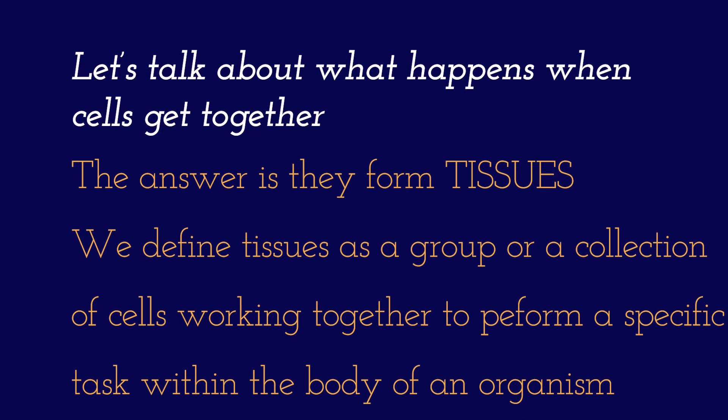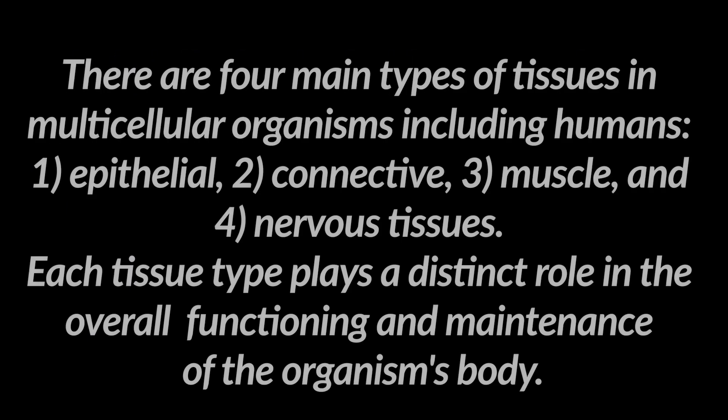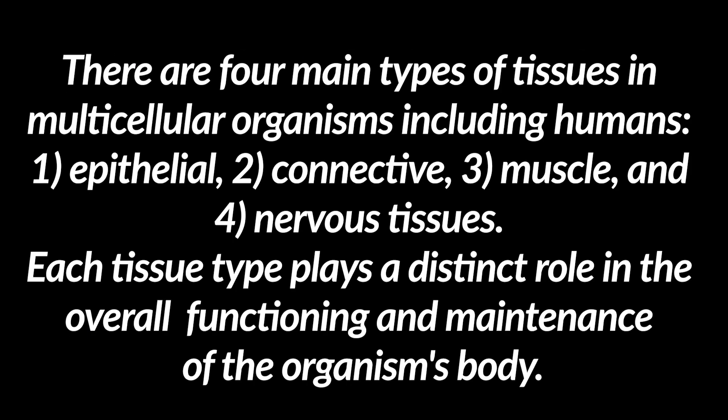When cells get together, they form tissues. We define tissues as a group or collection of cells working together to perform a specific task within the body of an organism. There are 4 main types of tissues in multicellular organisms, including humans.